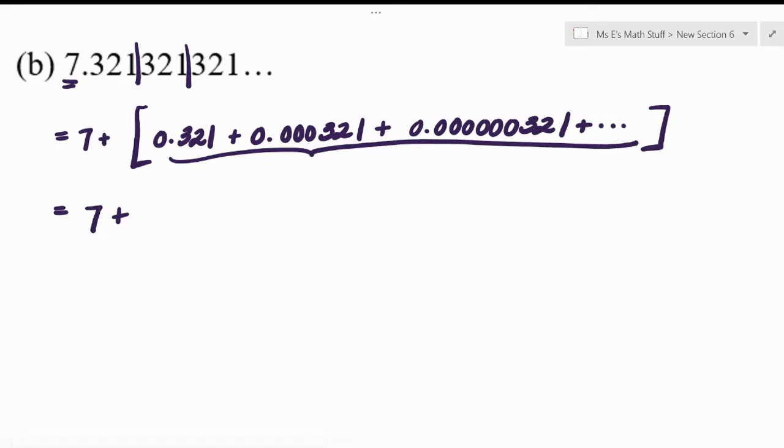So is the part inside the brackets geometric? What are they multiplying by to get from the first term to the second term? They're multiplying by one one-thousandth, and then are they doing it again for the rest? I claim yes. So it's geometric, it's infinite, its common ratio is between negative one and one, so we get to say yes to the sum formula.